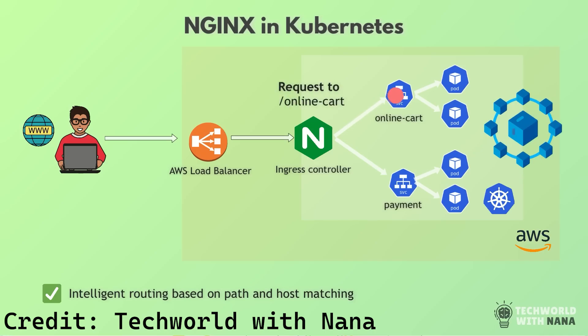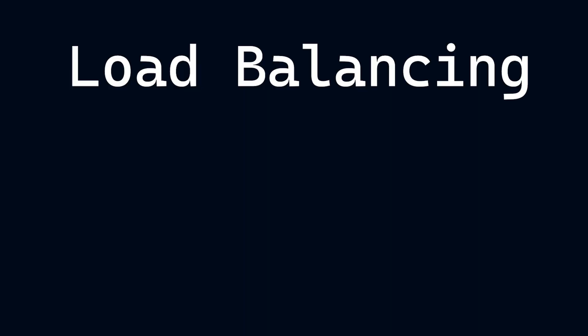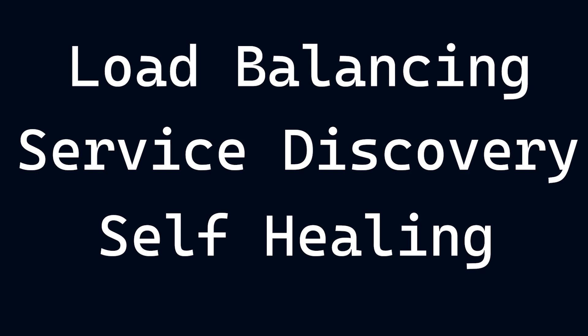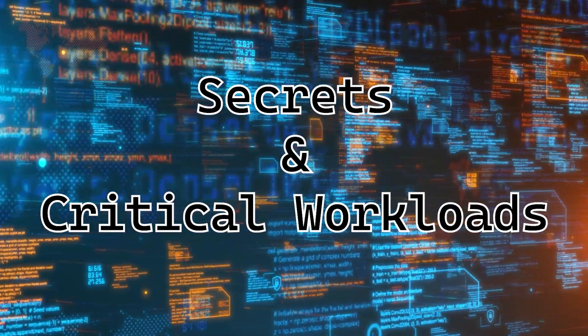Think of a Kubernetes cluster as a network of interconnected servers or nodes that run containerized applications. Kubernetes orchestrates these containers, ensuring they're deployed, scaled, and managed efficiently. It takes care of load balancing, service discovery, and even self-healing if something goes wrong. The Ingress controller, like Ingress NGINX, is a critical entry point where external traffic meets your cluster's internal network. If that gateway is compromised, an attacker could potentially access everything behind it, including sensitive secrets and critical workloads.